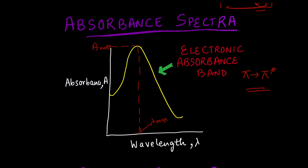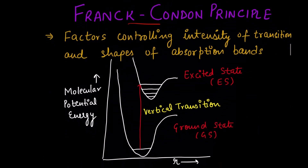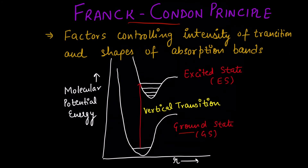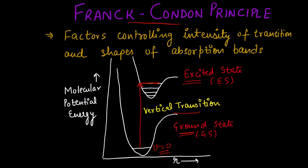The question is: what determines the intensity of this transition? That is explained by the Franck-Condon principle. This is the ground electronic state of the molecule and this is the excited state. The Franck-Condon principle states that when the electron gets excited from the lowest vibrational level of the ground state to a vibrational level in the excited state, that vertical transition is the most intense. The most intense transition goes from the lowest vibrational state of the ground state to a higher vibrational energy state in the excited state.